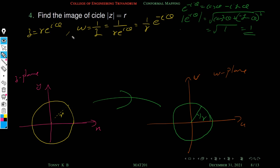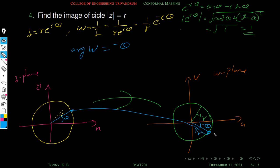Furthermore, the argument of z is θ, while the argument of w = (1/r)e^(-iθ) is -θ. So if a point has argument θ (measured anticlockwise), its image has argument -θ (clockwise). The radius changes from r to 1/r, so the point maps to a lower-plane point.